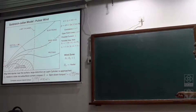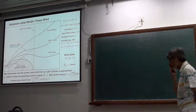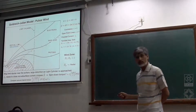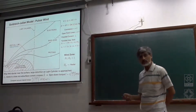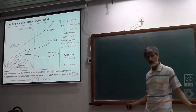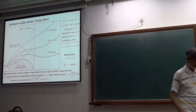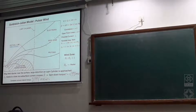Negative charge accumulates well above the null surface. This is not an electrosphere solution. In the electrosphere solution, there is no movement of charge. This is the Goldreich-Julian solution, which is different from the electrosphere solution.